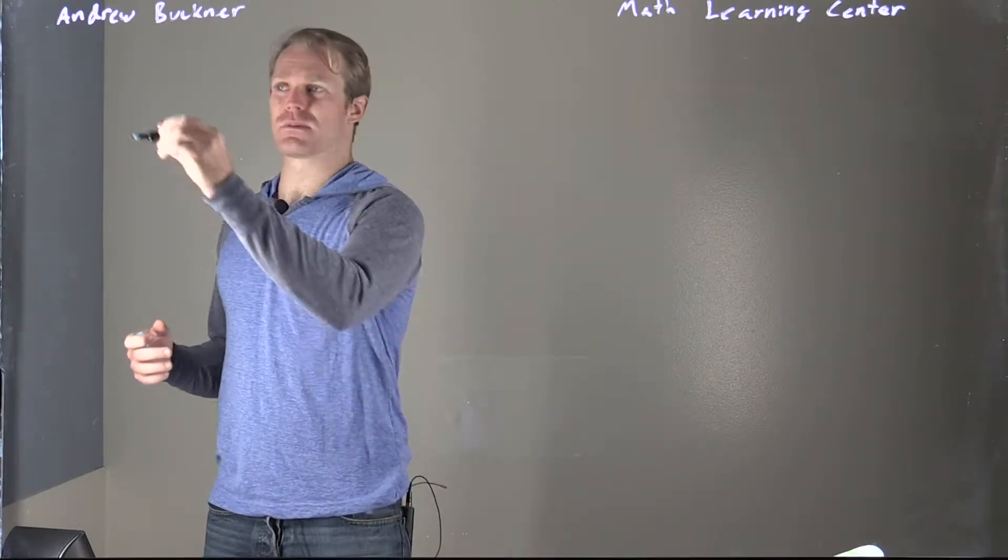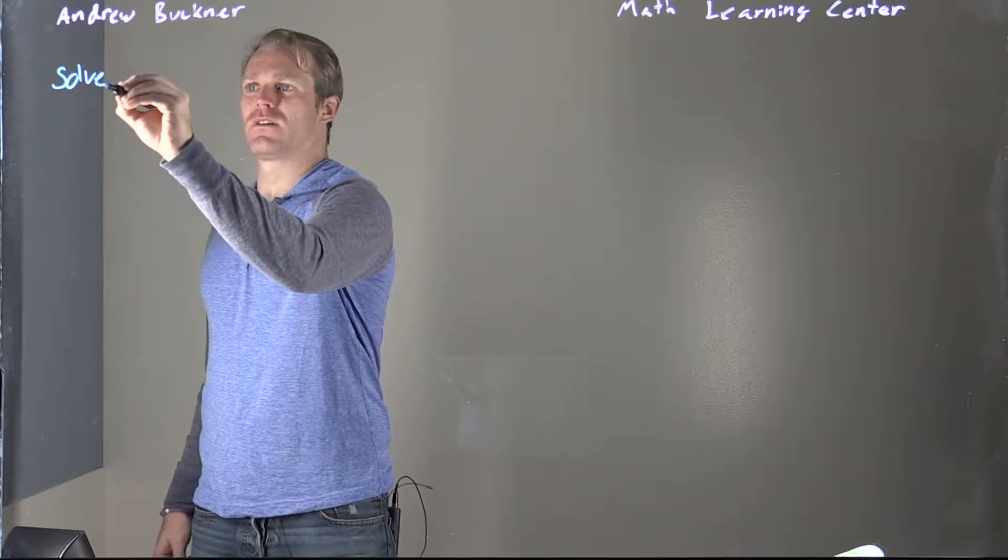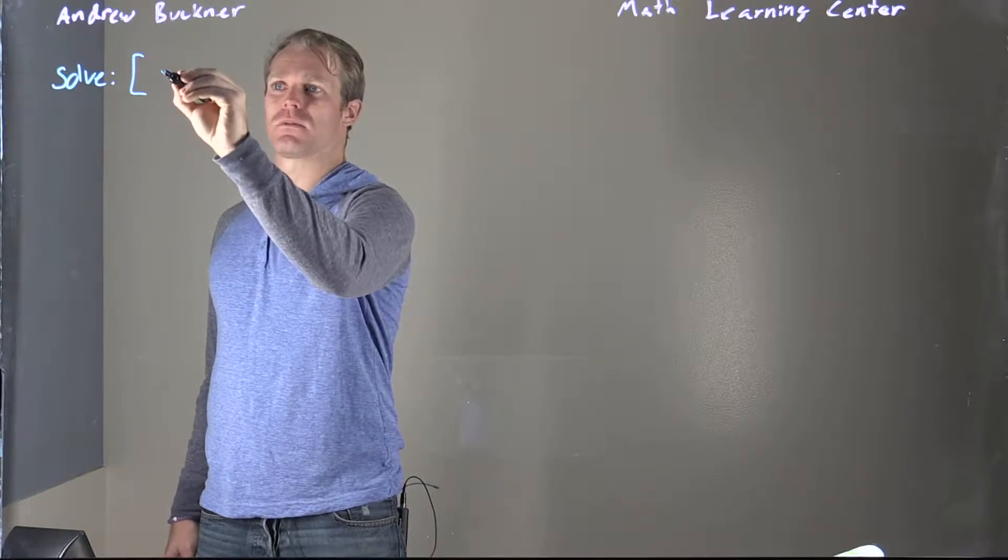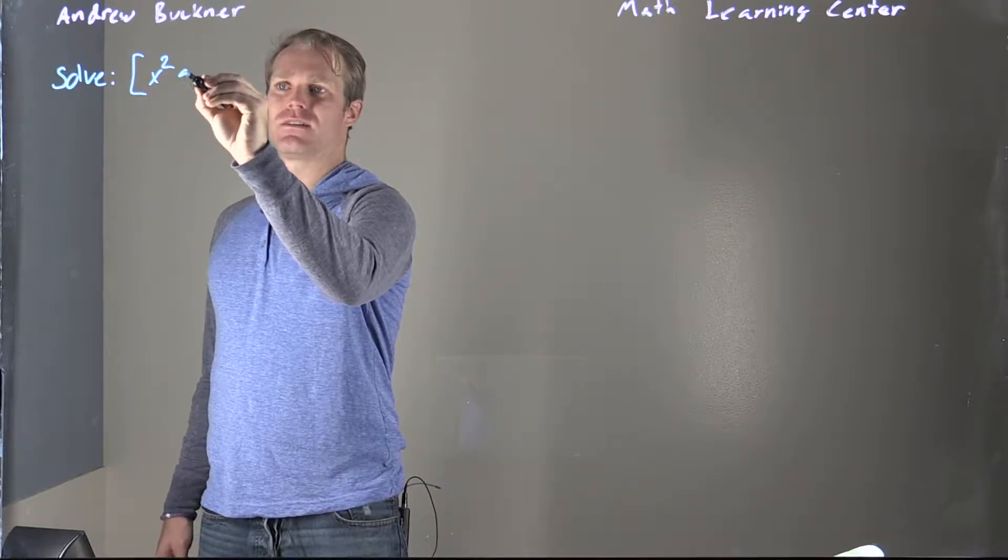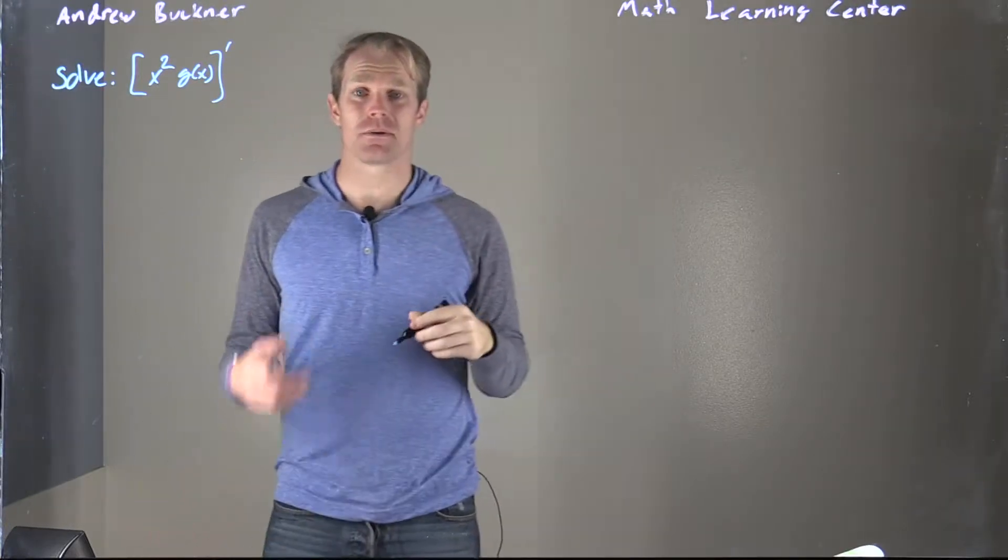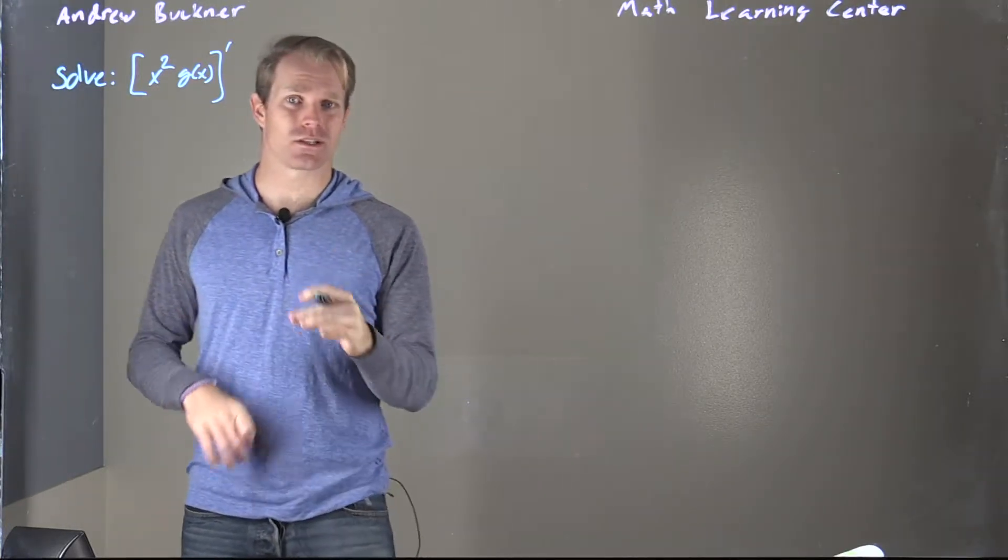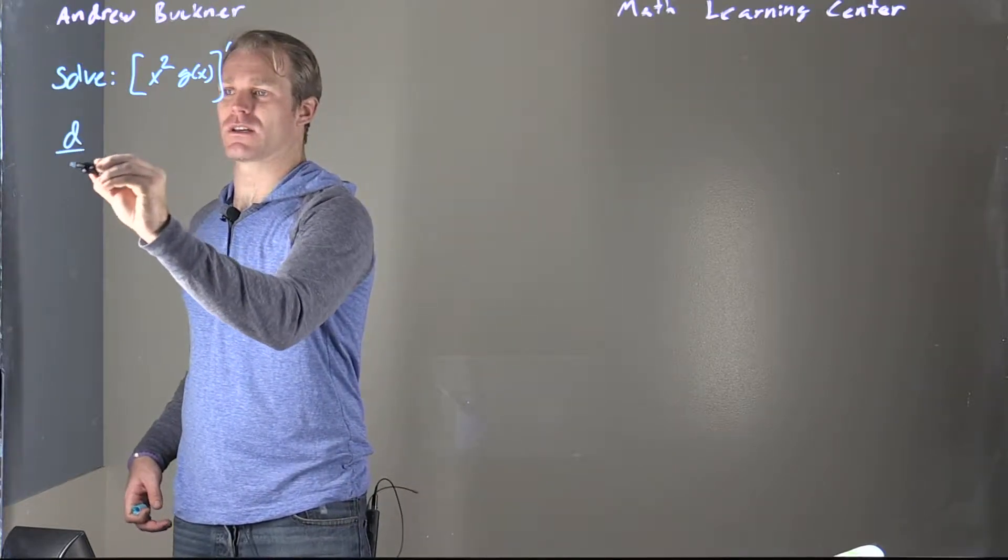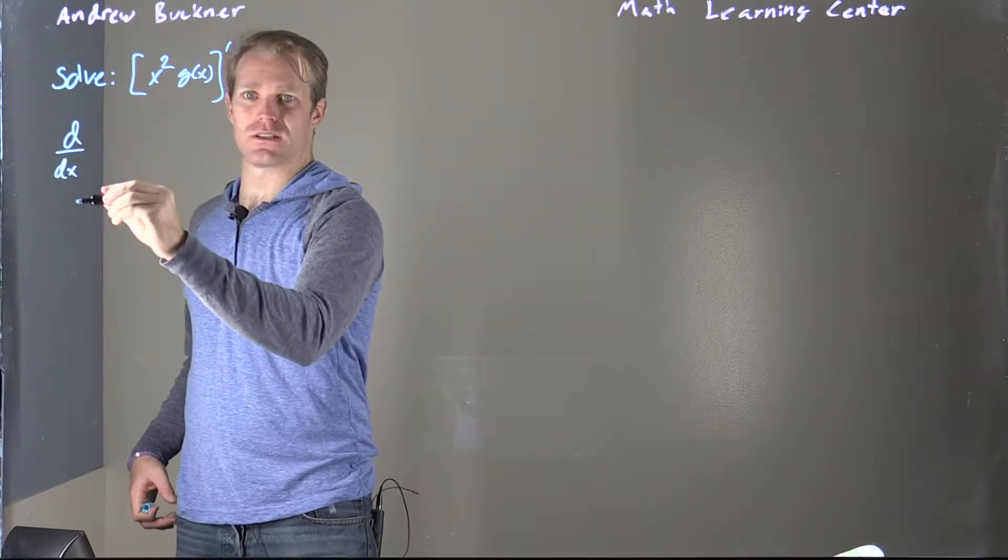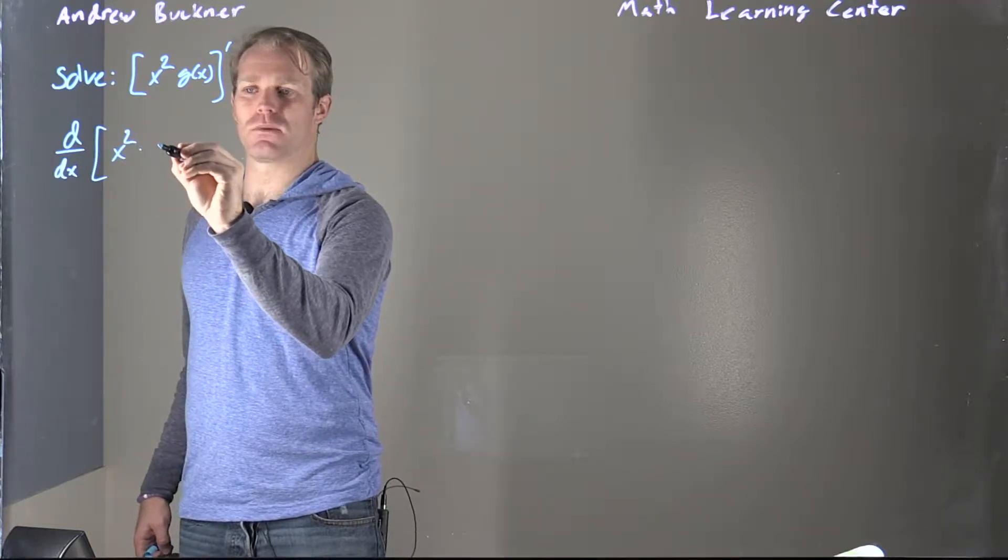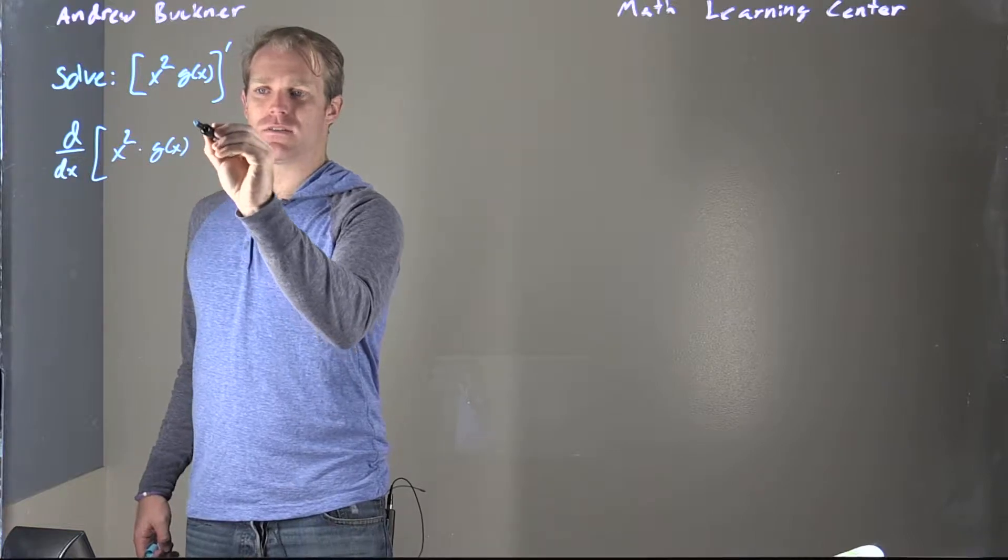So our problem specifically asks us to solve for the derivative, which I'm going to write as a prime form, of x squared g of x prime. I'm going to rewrite this so we can see that we're taking the derivative with respect to x in a certain way, which may look familiar to us. Where I would just put d over dx of x squared multiplied by g of x.